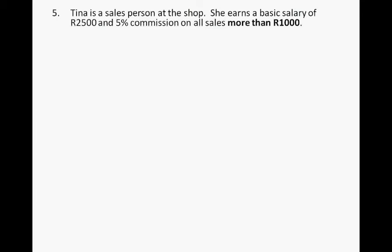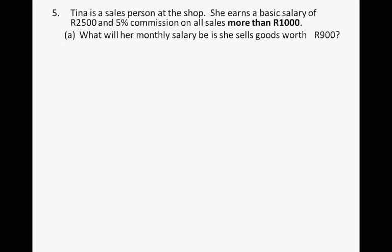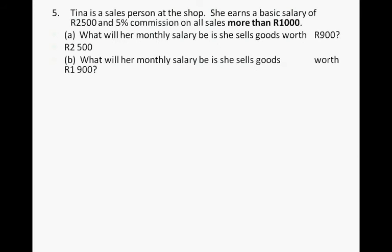Question five: Tina is a salesperson who earns a basic salary of $2,500 and 5% commission on all sales more than $1,000. If she sells goods worth $900, her salary will only be $2,500 — no commission applies. If she sells goods worth $1,900,000, it's $2,500 plus $1,900,000 times 5%, which is $95,000. So she earns $2,595,000 for that month.